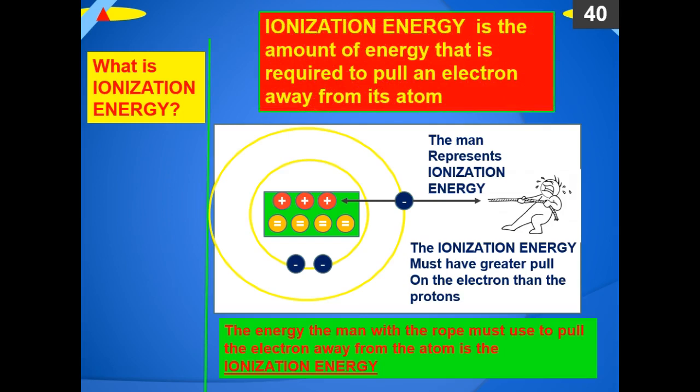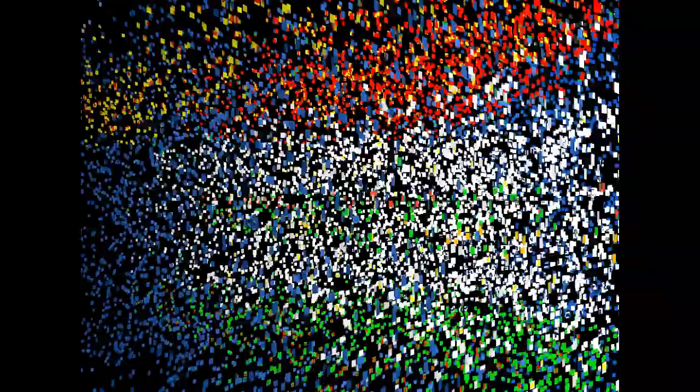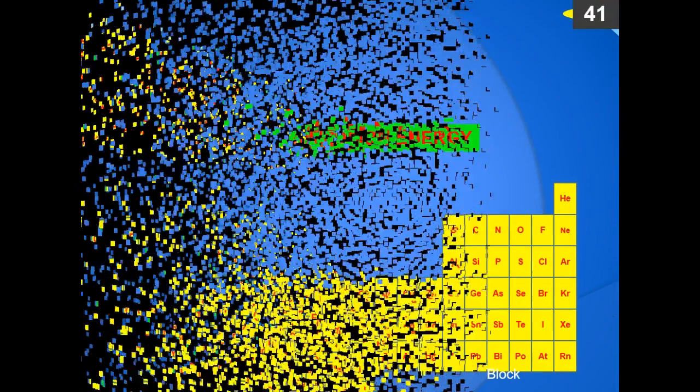Ionization energy is the amount of energy that is required to pull an electron away from its atom. Ionization energy increases as you go up the periodic table from bottom to top, and as you go from left to right. The lowest ionization energy elements — the ones that give up their electrons the easiest — would be elements like rubidium, strontium, barium, cesium, down on the lower left side of the periodic table.